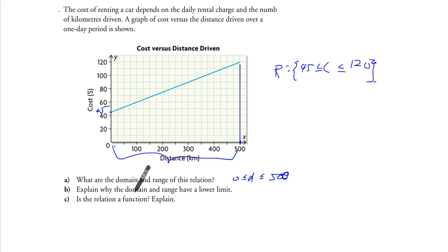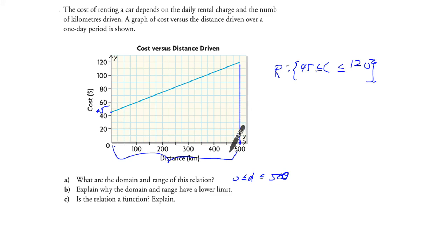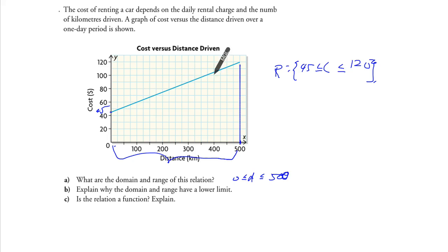And why does the domain and range have a lower limit? Because we cannot drive an infinite distance in a day. That's why it's limiting ourselves to a maximum of 500. In real life, a graph could go forever, but whether it's time, x value, or distance, we cannot do it forever.